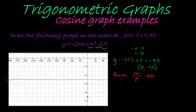The reason we do this is to divide the period into 4 pieces: where I start, where I reach my center, where I reach my maximum, where I reach center again, and where I reach my minimum.